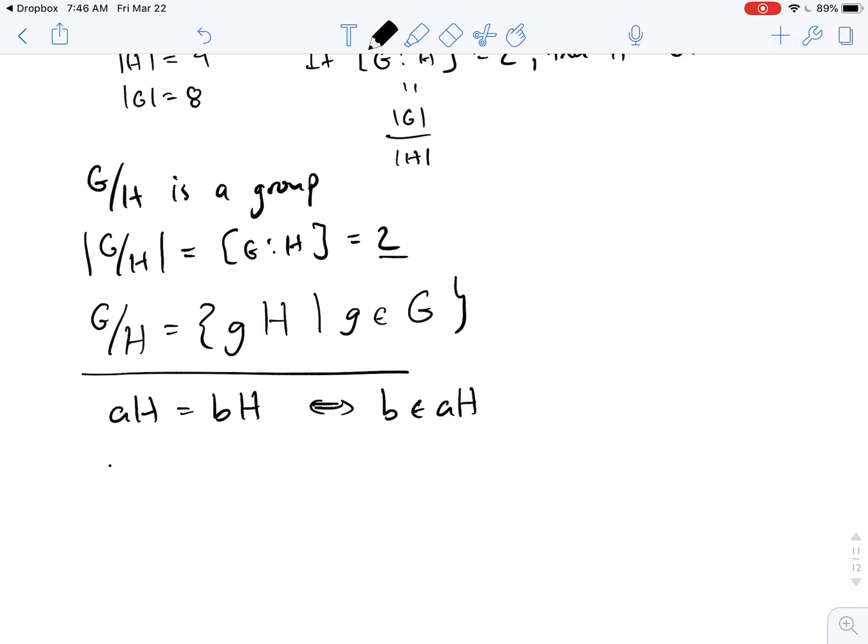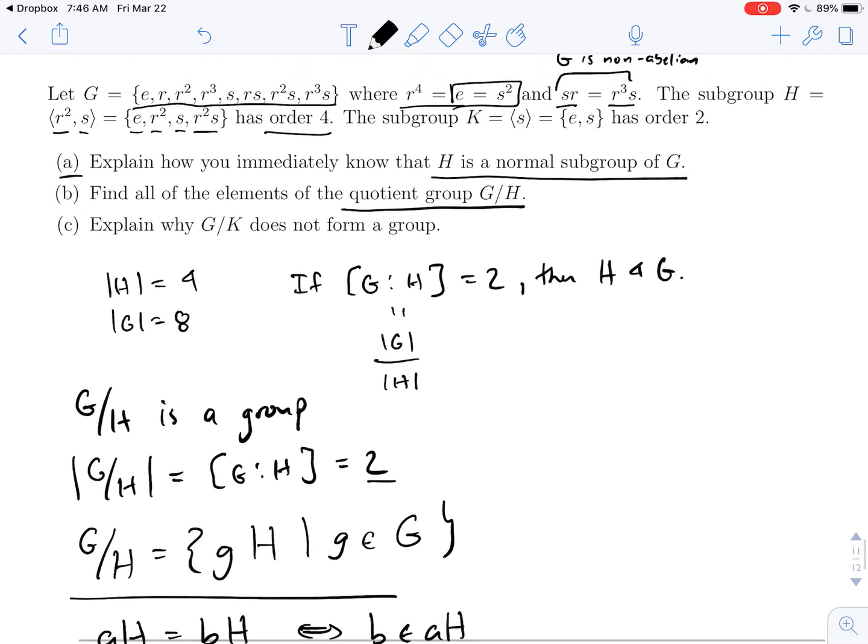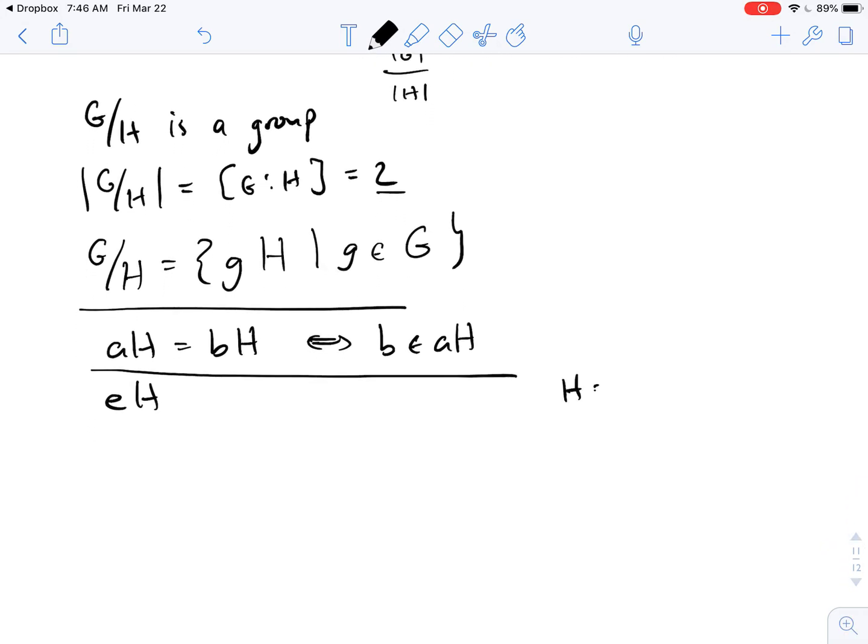So let me give you an example. So here, if I take the identity times RH, and we'll actually use RH from up above. So RH will be E, R squared, S and R squared S. So let's write that on the side: E, R squared, S and R squared S. Well, EH, that's actually just going to be the same thing as H. So it'll be E, R squared, S and R squared S. And what this result above tells us is that R squared H and SH and R squared SH all have to equal EH. So I don't need to write down all four of these. I just need one of them when I try to write down G mod H.